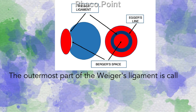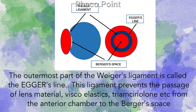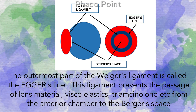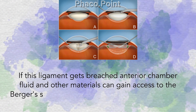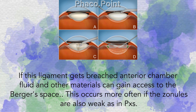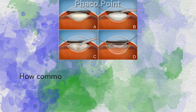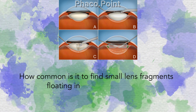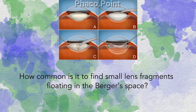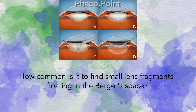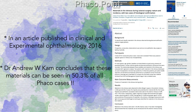The Berger space is bounded by the Weger ligament, or the capsulohyaloid ligament, which is a ring-like attachment of the posterior capsule and the anterior hyaloid face. The outermost part of the Weger ligament is called Egger's line. This ligament prevents the passage of lens material, viscoelastics, triamcinolone, etc. from the anterior chamber into the Berger space. If this ligament gets breached, anterior chamber fluid and other materials can gain access to the Berger space — this occurs more often if the zonules are also weak, as in pseudoexfoliation. How common is it to find small lens fragments floating in the Berger space? I think all of us have experienced this at some point in our phaco career.